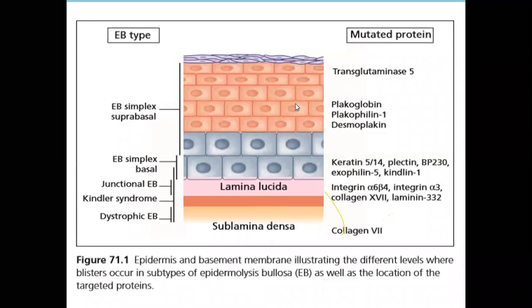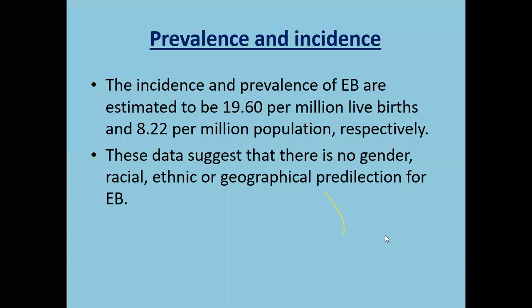To explain the mutant proteins: if the split is at the level of epidermis in EB simplex, it is suprabasal or basal. The main mutant proteins in EB simplex are transglutaminase 5, plakoglobulin, plakophyllin, and desmoplakin. In junctional EB, where the split is at lamina lucida, the main proteins are integrin alpha-6 beta-4, integrin alpha-3, collagen 17, and laminin 332. In dystrophic EB, which is in the sub-lamina densa, the main protein is collagen 7.